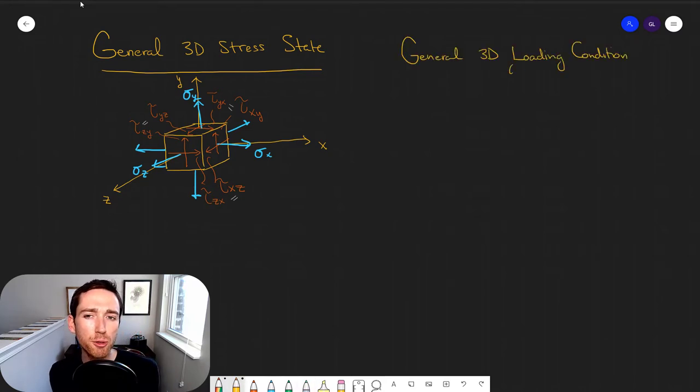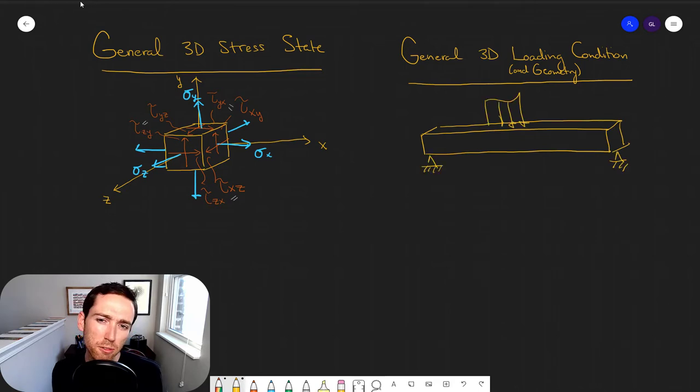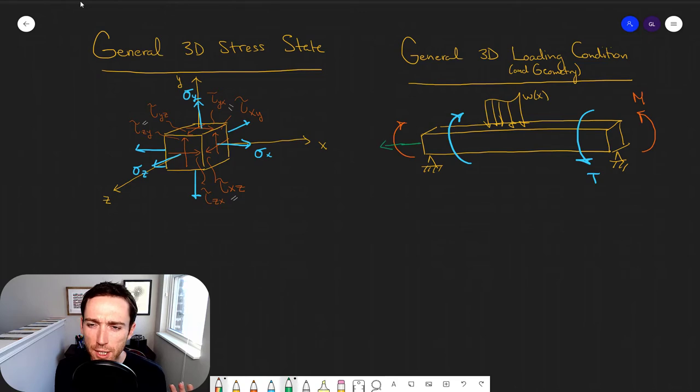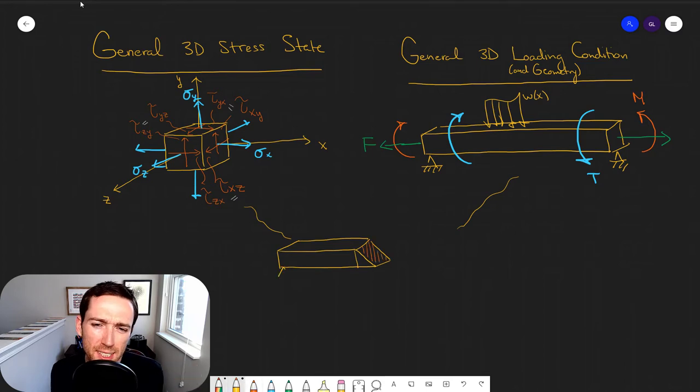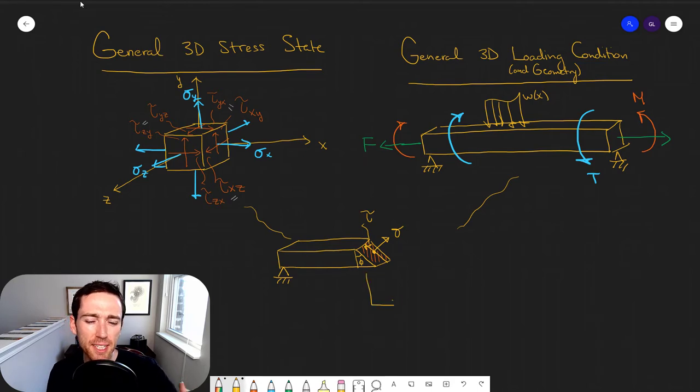We've also looked at the general three-dimensional loading and geometries we can have. We can have a bar or a beam. We can put random loads on it. We can torque things. We can put bending moments. We can pull or push. Moreover, as we've seen before, we can take a simple two-dimensional bar and we can look at just a plane inside of it that's angled.